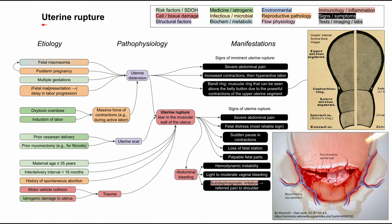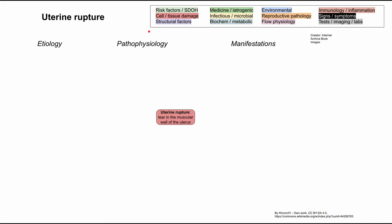This is a short video on uterine rupture. I'll briefly talk about the etiology, the pathophysiology, and the manifestations of uterine rupture. As in all of these flowcharts, each of the boxes is color-coded according to the legend in the top right. I'll be clearing all the boxes and talking through them one by one as we repopulate the flowchart.